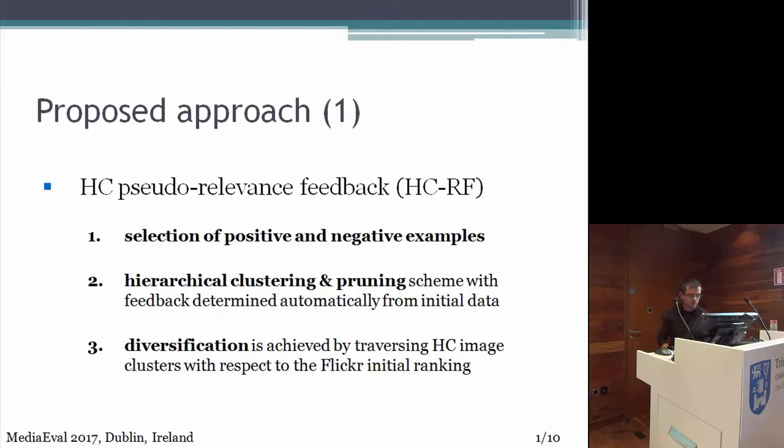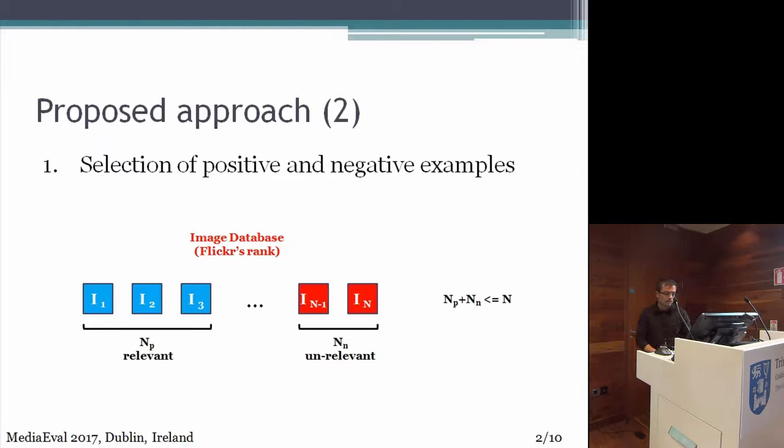Then we feed them to a hierarchical clustering scheme. After that, we apply a pruning step. Then we perform a diversification scheme, which is achieved by traversing the resulting clusters with respect to the Flickr initial ranking.